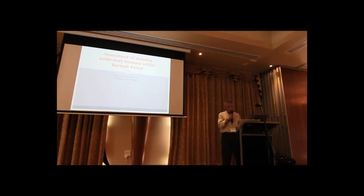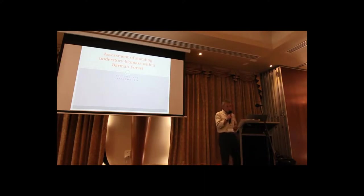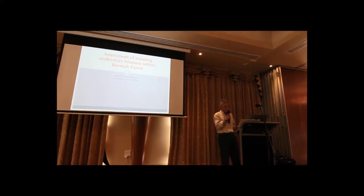We established seven transects across the forest on a range of understorey types. There were three types of transects: they were either dominated by palatable species — palatable to cattle — they could have been weedy, or they may have had little understorey. So there was a range of types of transects that we measured.